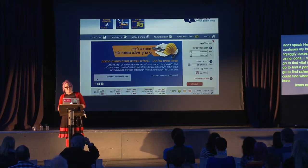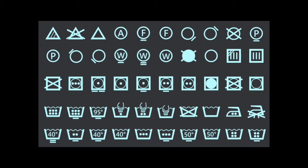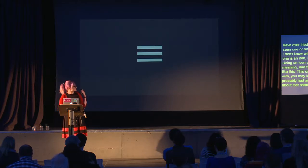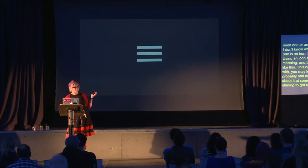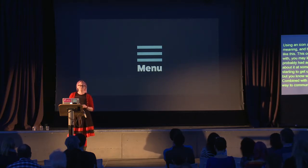Icons can improve navigation, but using them alone isn't necessarily a great choice — then we have things like laundry symbols. I don't know what any of these mean; I think one's an iron. Using an icon alone can often lead to unclear meaning, and the web is full of laundry icons like these. You're probably familiar with the hamburger menu — you may love it or hate it. But you know what makes it clearer? Text. Combined with text, icons are a great way to communicate important information. It gives your audience an additional way to understand your message.